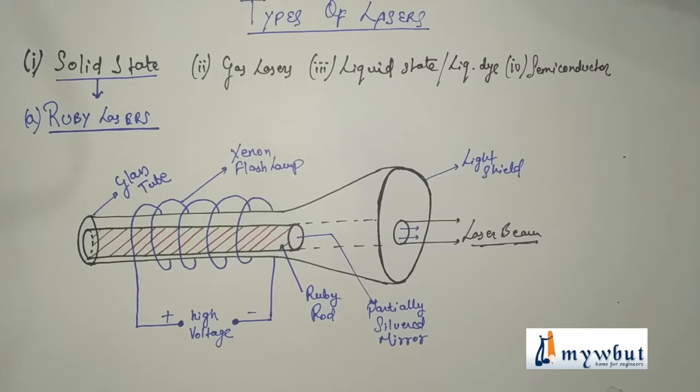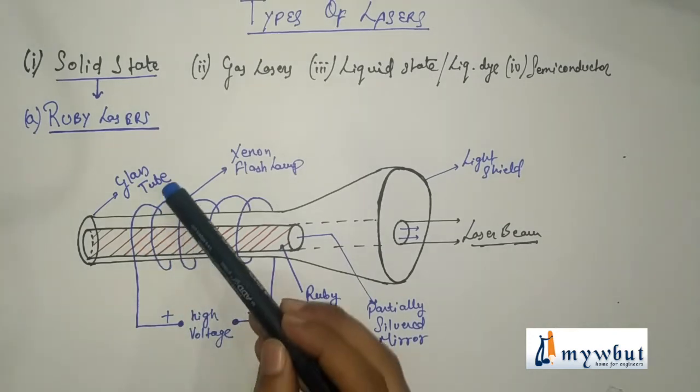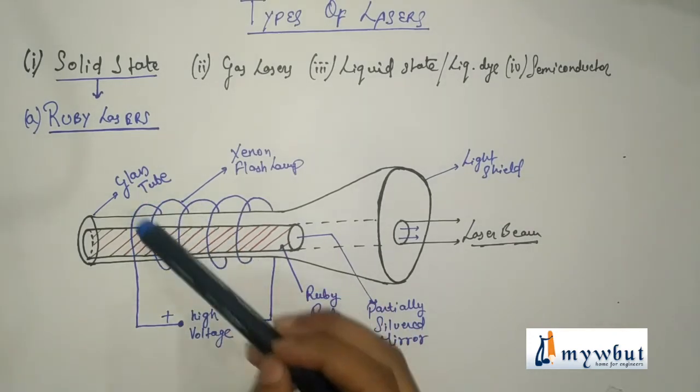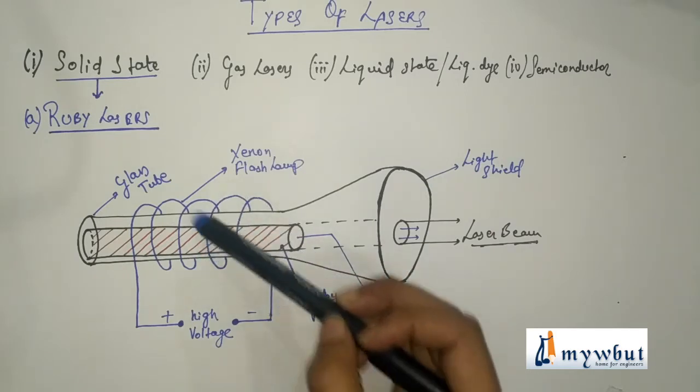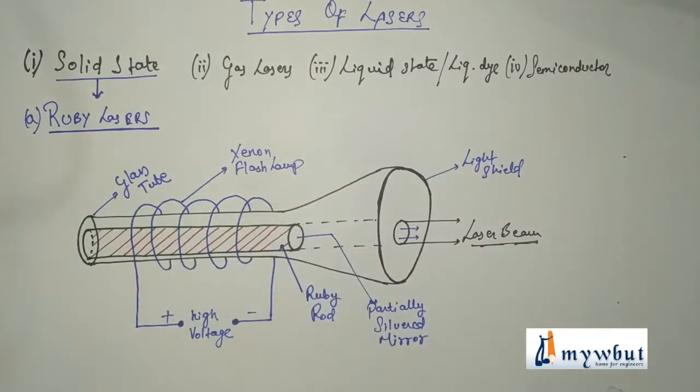The rod is surrounded by a high intensity helical flash lamp. This is the helical flash lamp. This goes around like this. Filled with xenon gas which provides sufficient light to produce population inversion. So it is stimulated emission and the xenon flash lamp provides sufficient light for population inversion activity.